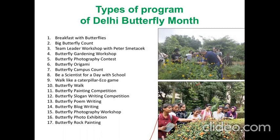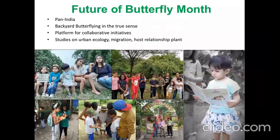People learn about butterflies, learn how to identify them, how to record data, and how to change the habitats in their houses, parks, or gardens to help butterfly populations. With Corona, butterfly month could actually go to its purest form. When we imagined butterfly month, we wanted everybody to do backyard butterflying, not just go to national parks or green areas. People think there are not many butterflies in their backyard, but now we have an opportunity to really invest time in our backyards, because we know lockdown can come again anytime.